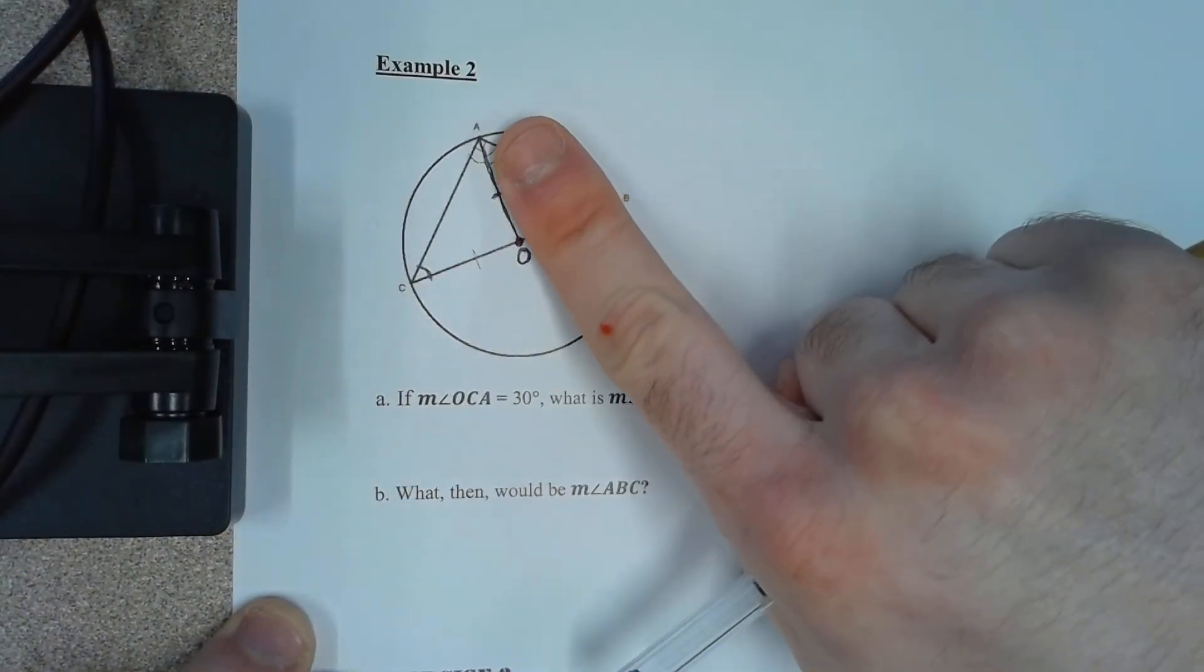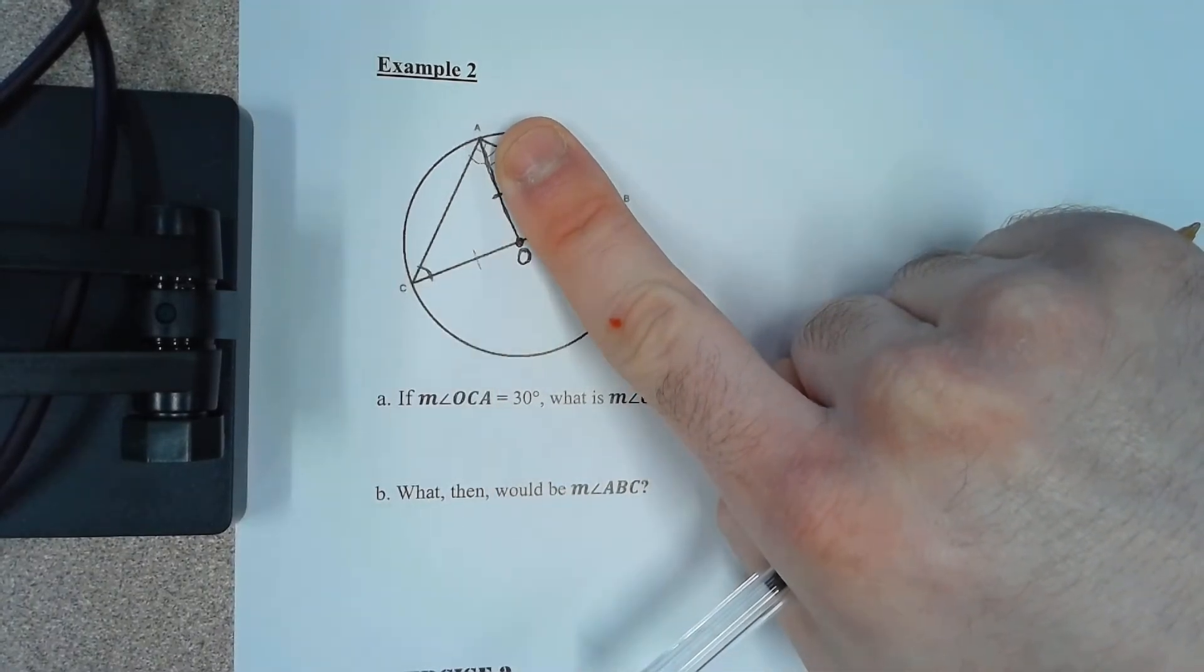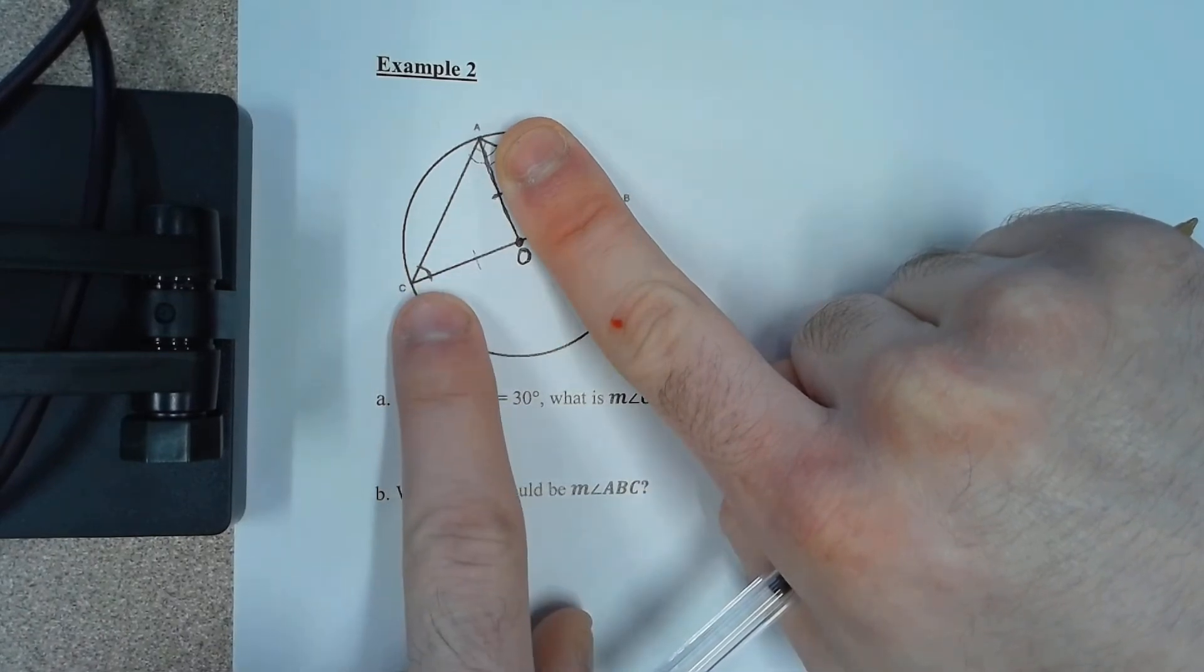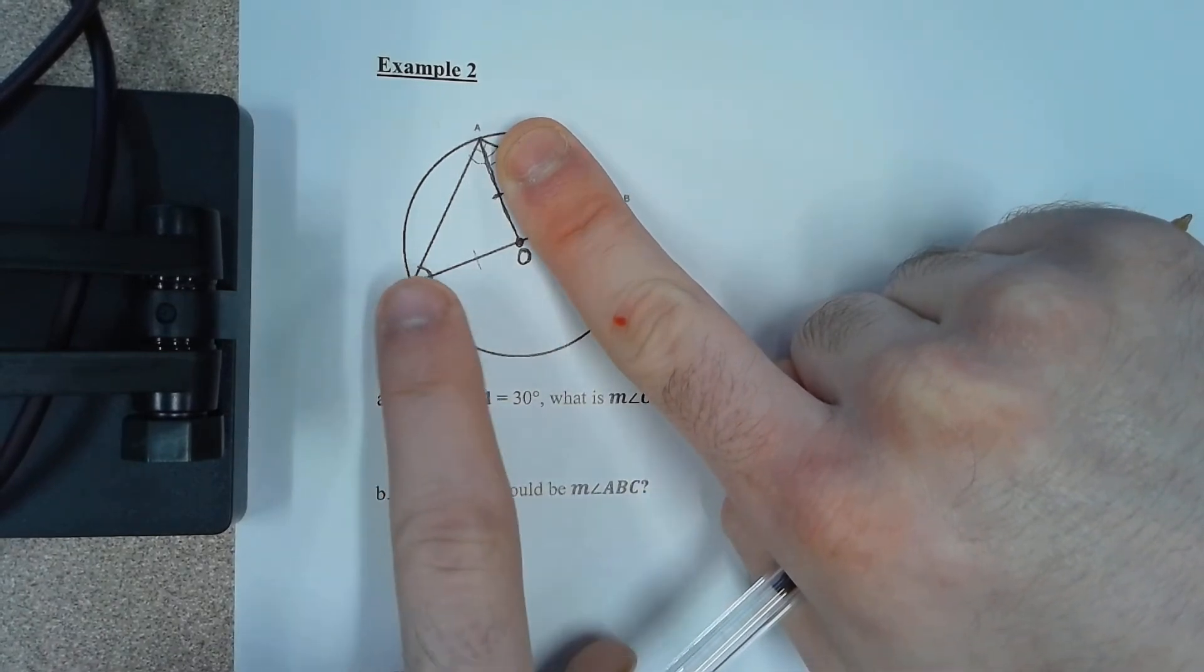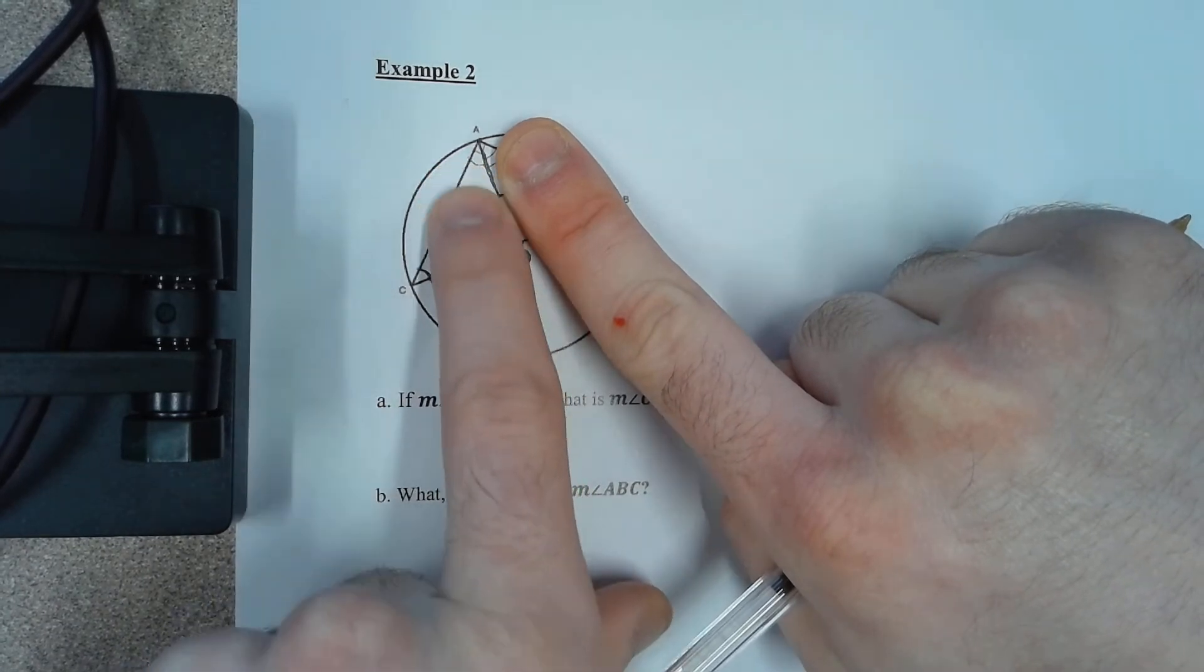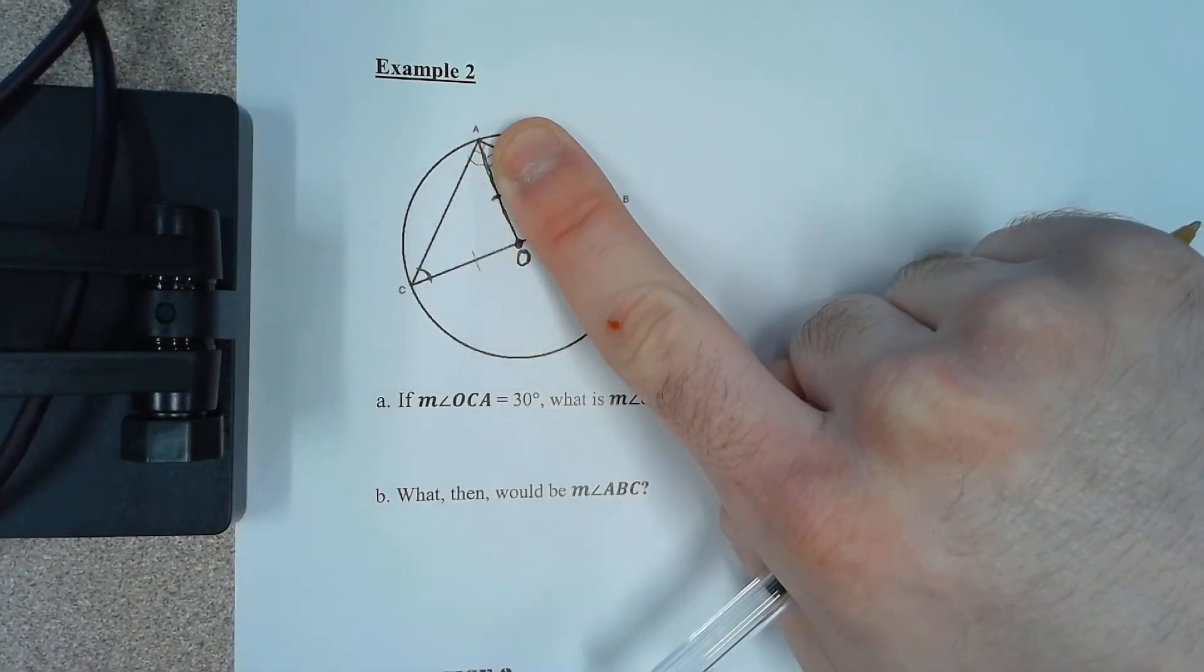Let's just ignore this triangle for a second and just look at triangle COA. OCA is 30 degrees. That means CAO is 30 degrees as well, because A is on the other part of the circle. So the angle C is 30, the angle A is 30.